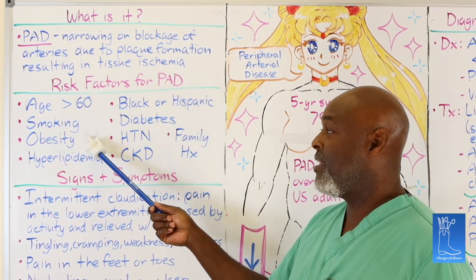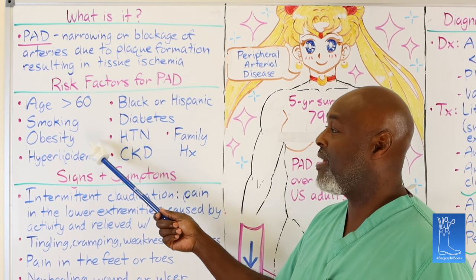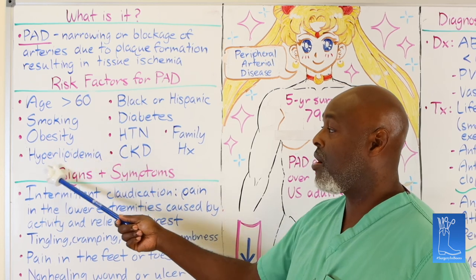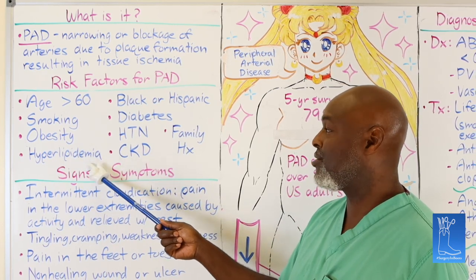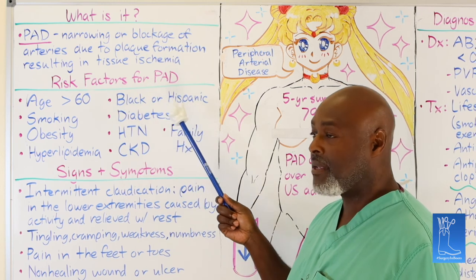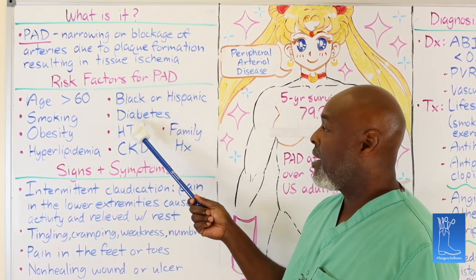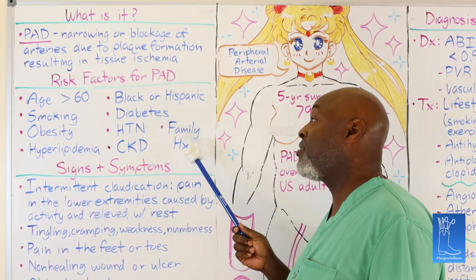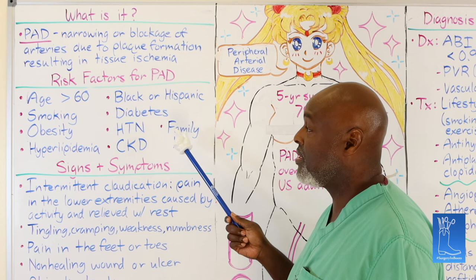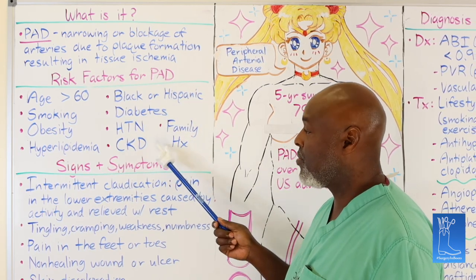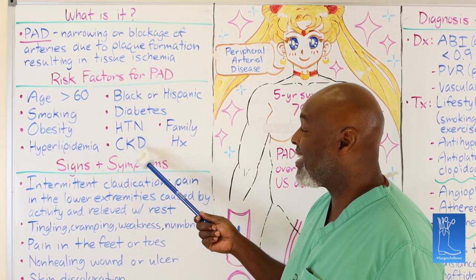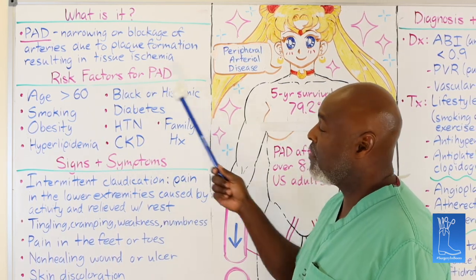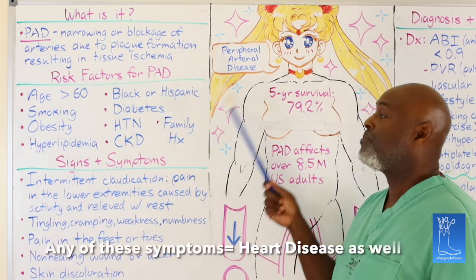Obesity is another risk factor — when you overeat, it's often high-cholesterol foods, which causes hyperlipidemia. Being Black or Hispanic puts people of color at higher risk. Hypertension, especially poorly controlled, is a major risk factor, as is a family history of coronary artery disease or peripheral vascular disease. Chronic kidney disease also puts you at risk for these problems.